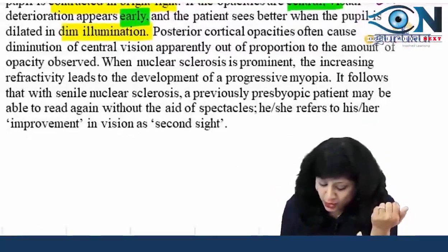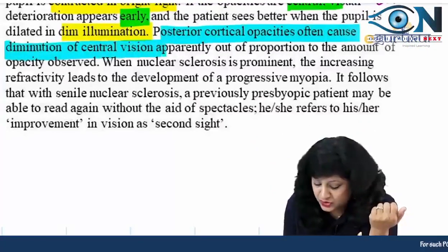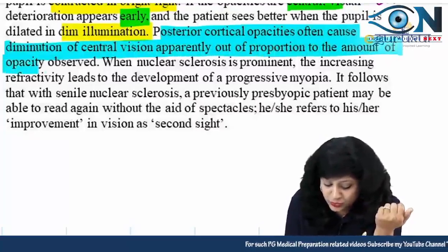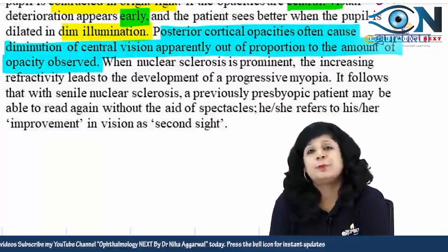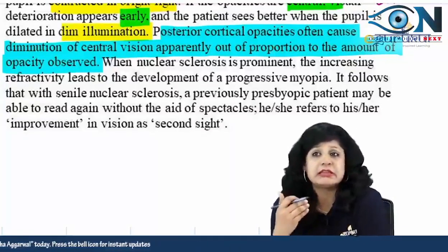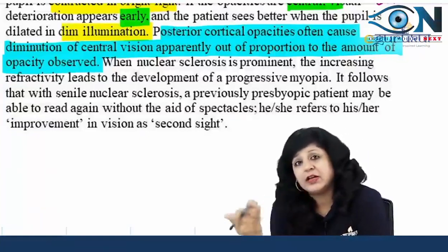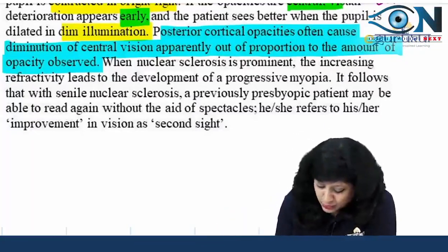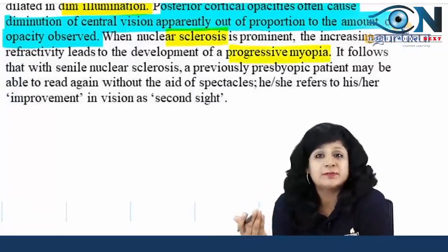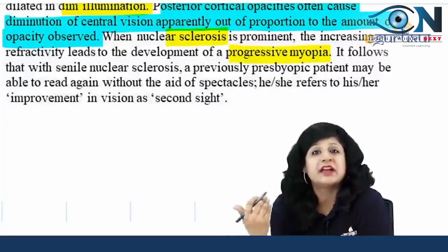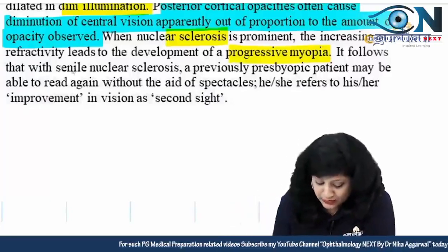Posterior cortical opacities often cause diminution of central vision apparently out of proportion to the amount of opacity observed. Posterior subcapsular opacities tend to affect vision much more than anterior ones because the nodal point passes through that axis. In nuclear sclerosis, increasing refractivity leads to progressive myopia. If there is increased hardening of the nucleus, we have progressive index myopia leading to second sight — following nuclear senile sclerosis, a previously presbyopic patient may be able to read without the aid of spectacles.